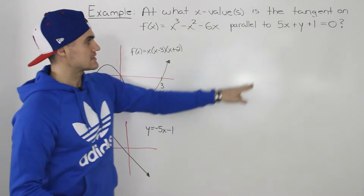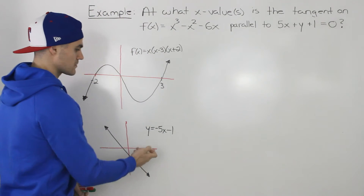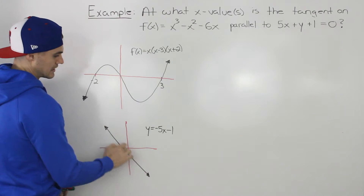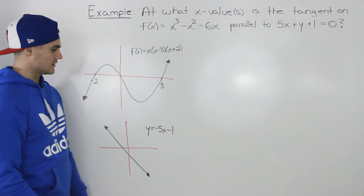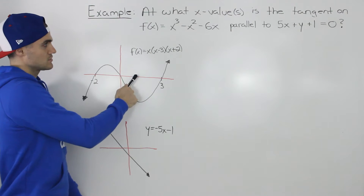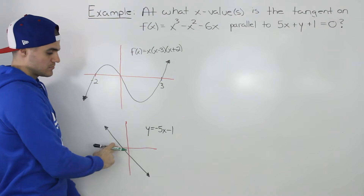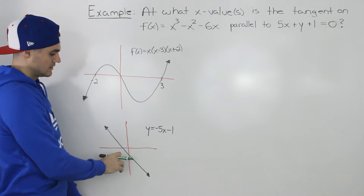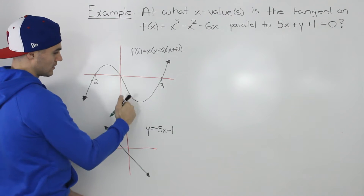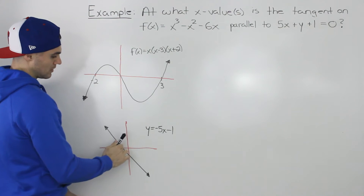If we take this line and isolate for y to put it into y = mx + b form, we get y = -5x - 1. So that's the line. We want to find any x values on this function for which a tangent is going to be parallel to this line.